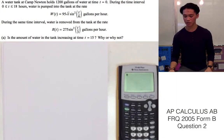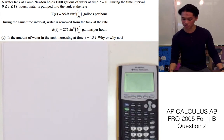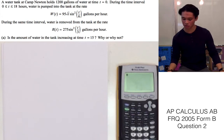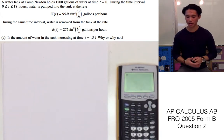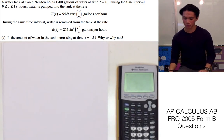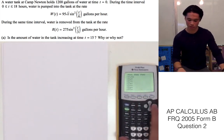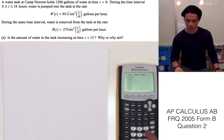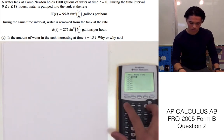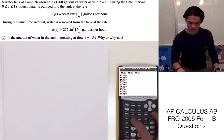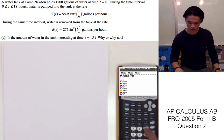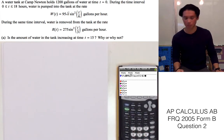Alright guys, we're going to be taking a look at an FRQ from the 2005 AP Calculus Test Form B. A water tank at Camp Newton holds 1200 gallons of water at time t equals 0. During the time interval where t is between 0 and 18 hours, water is pumped into the tank, modeled by W of t. During the same time interval, water is removed from the tank represented by R of t. The first thing we can do is put these functions into our calculator: y sub 1 will be W of t, and y sub 2 will be R of t.